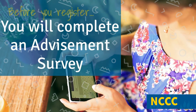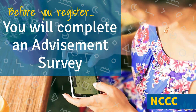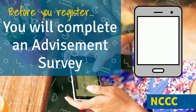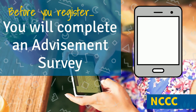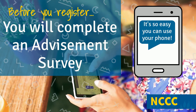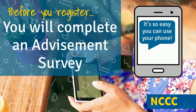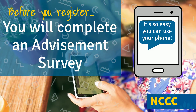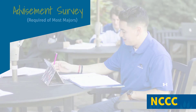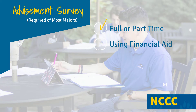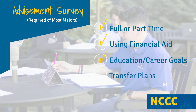Before you register, most students will be required to complete an advisement survey online. An academic advisor will then create a plan for you comprised of recommended courses for the upcoming semester, according to how you complete your survey. Your survey responses will let the academic advisor know if you plan on being full-time or part-time, if you anticipate using financial aid, if you plan on transferring to another college after NCCC, or if there is a high-demand major at NCCC such as nursing that you are preparing to apply to.